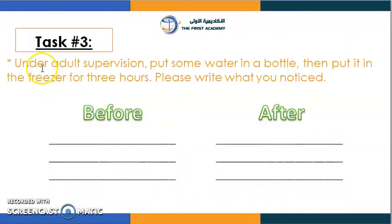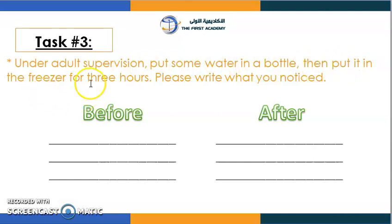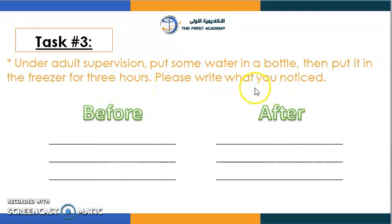For our final task, you need a parent — your mom, dad, or a helper — to assist you. Put some water in a bottle, then place it in the freezer for three hours, and write down what happened after you took it out of the freezer.